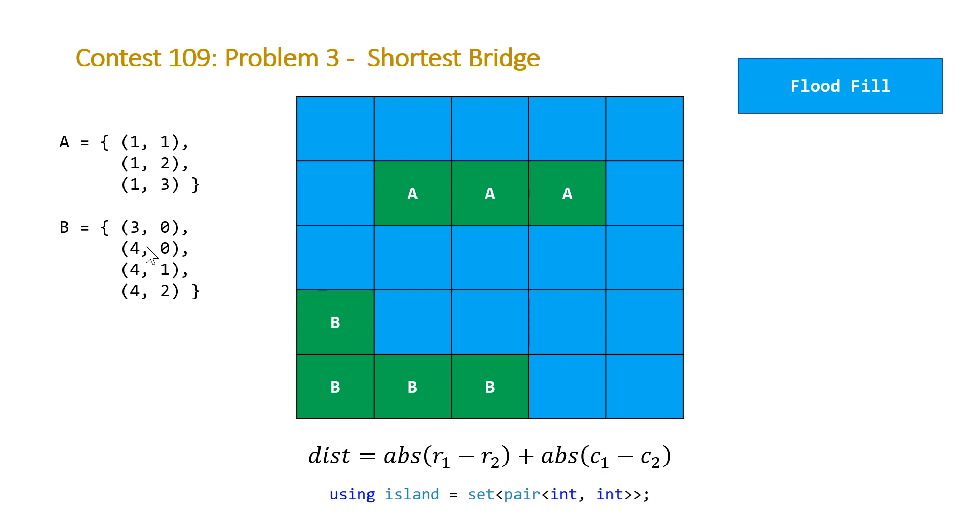When we plug that in, we end up with 3 minus 1 plus 0 minus 1 absolute values, which is going to give us 2 plus 1, because it actually includes one of the points. So we have to make sure to subtract 1 in our distance formula here. We're good to go. That's really the whole algorithm. It's a pretty neat problem. I always enjoy implementing flood fills because I think it's a neat algorithm. Let's take a look at our code.